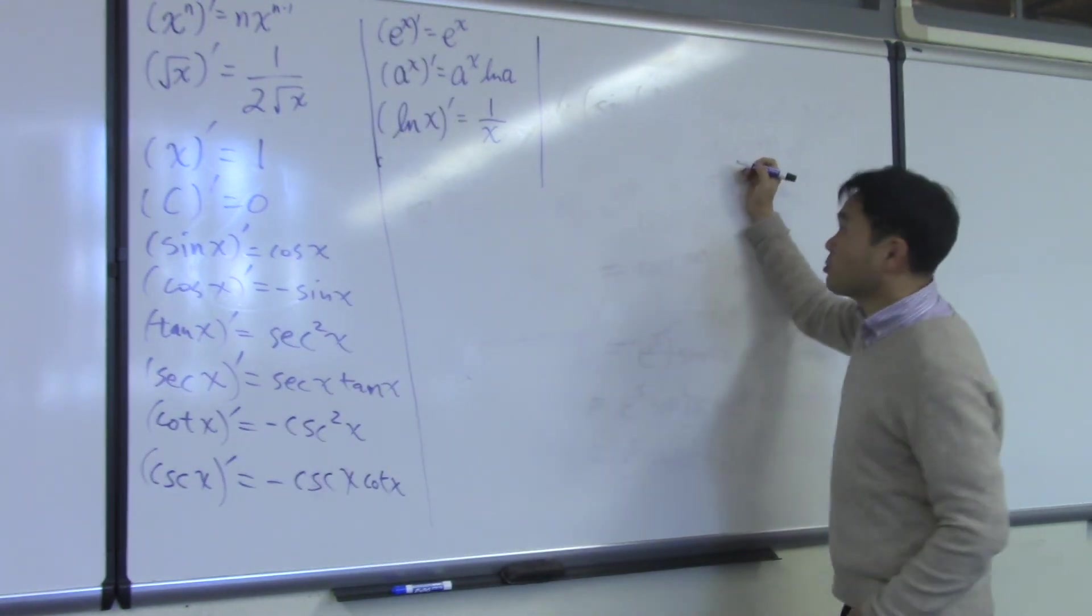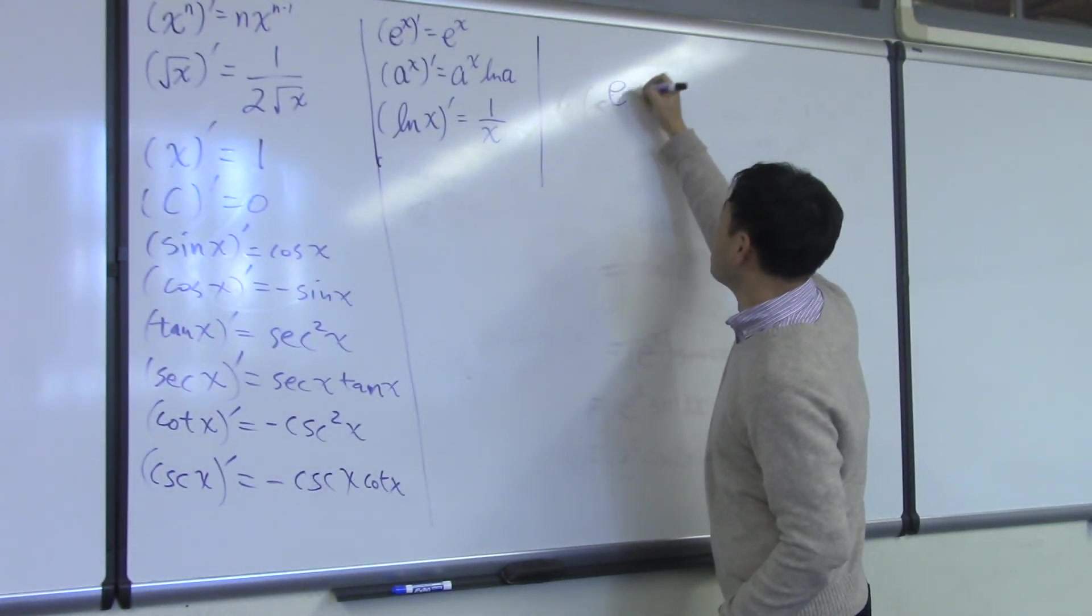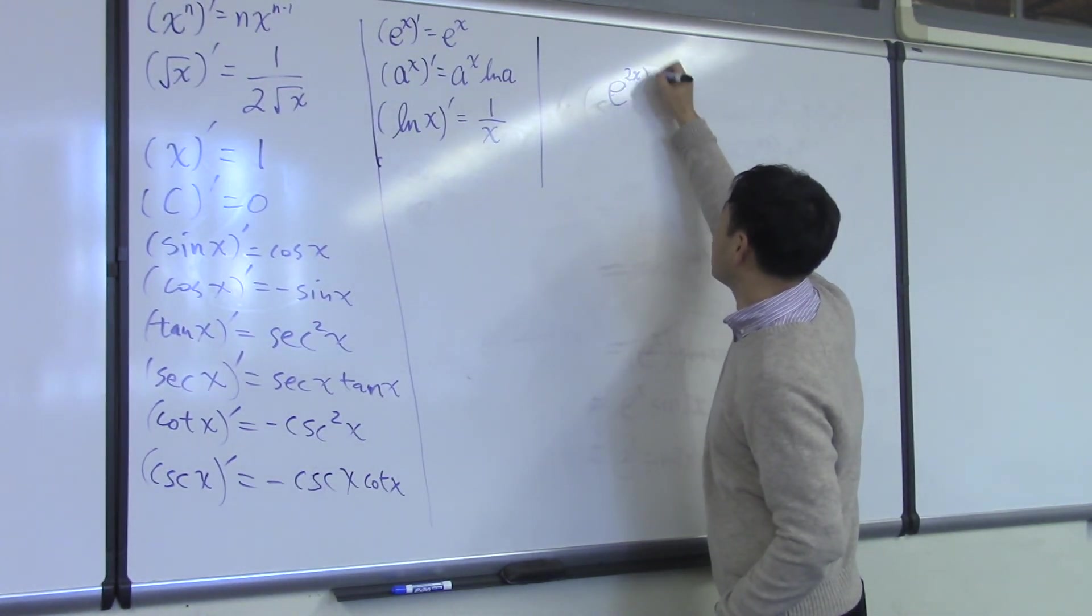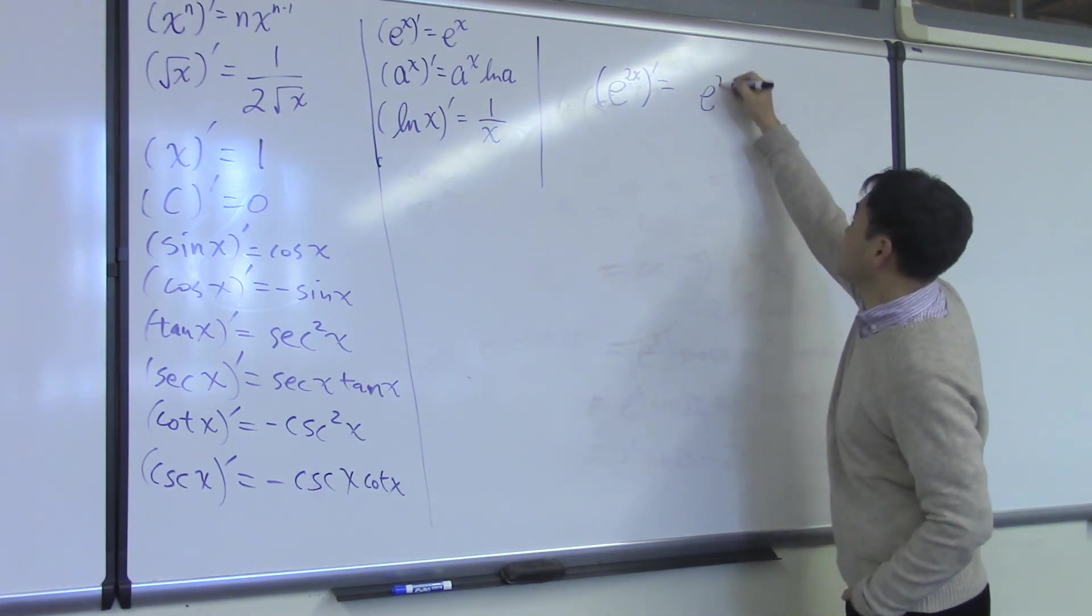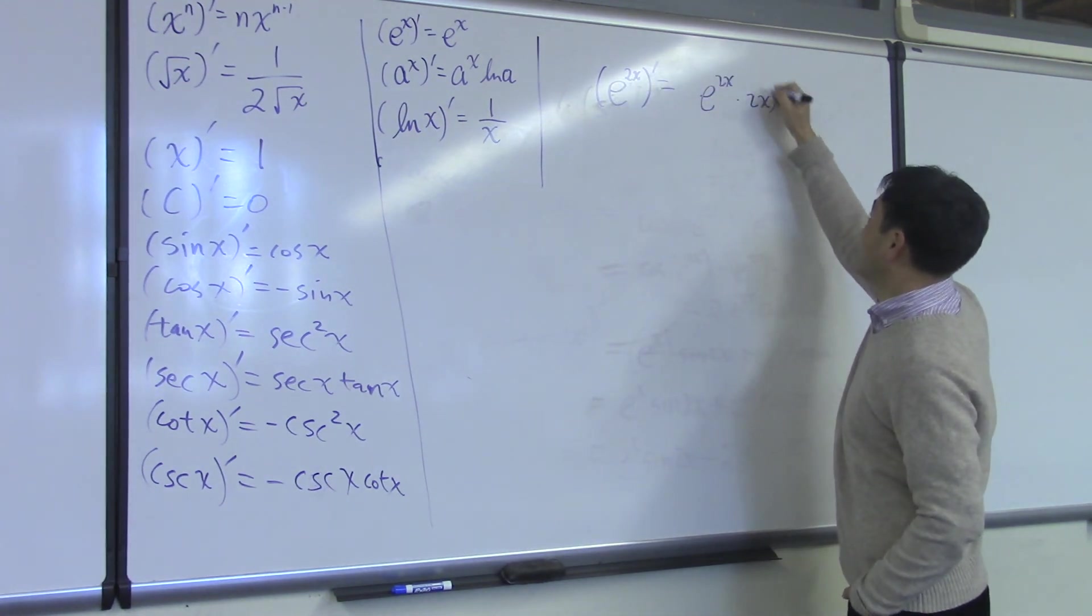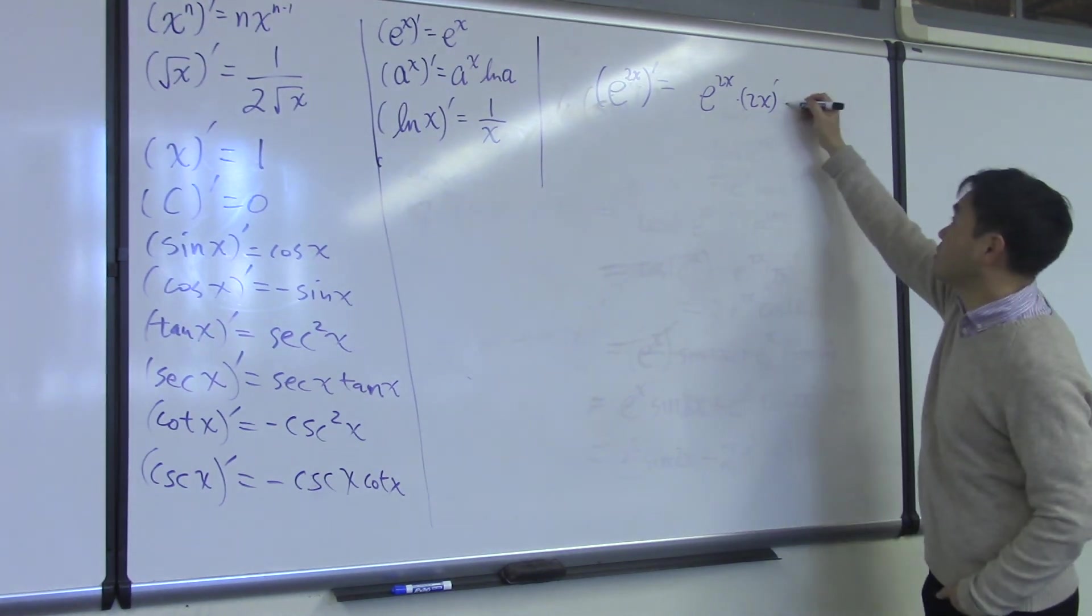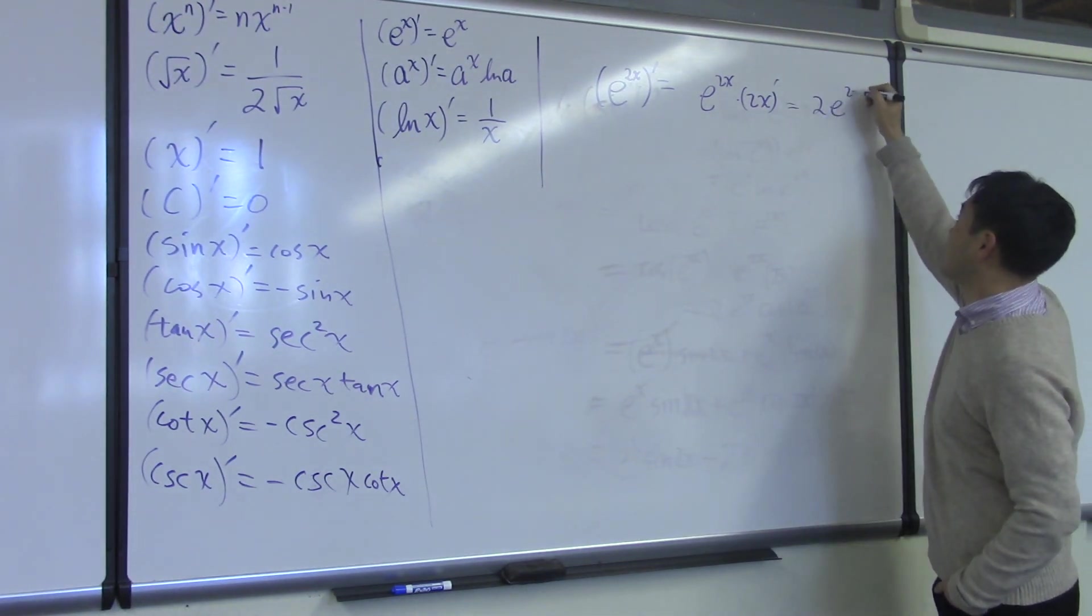First thing that you may have noticed is that if you differentiate e to the 2x, because 2x is pulled outside and you get to differentiate, you end up with 2 times e to the 2x.